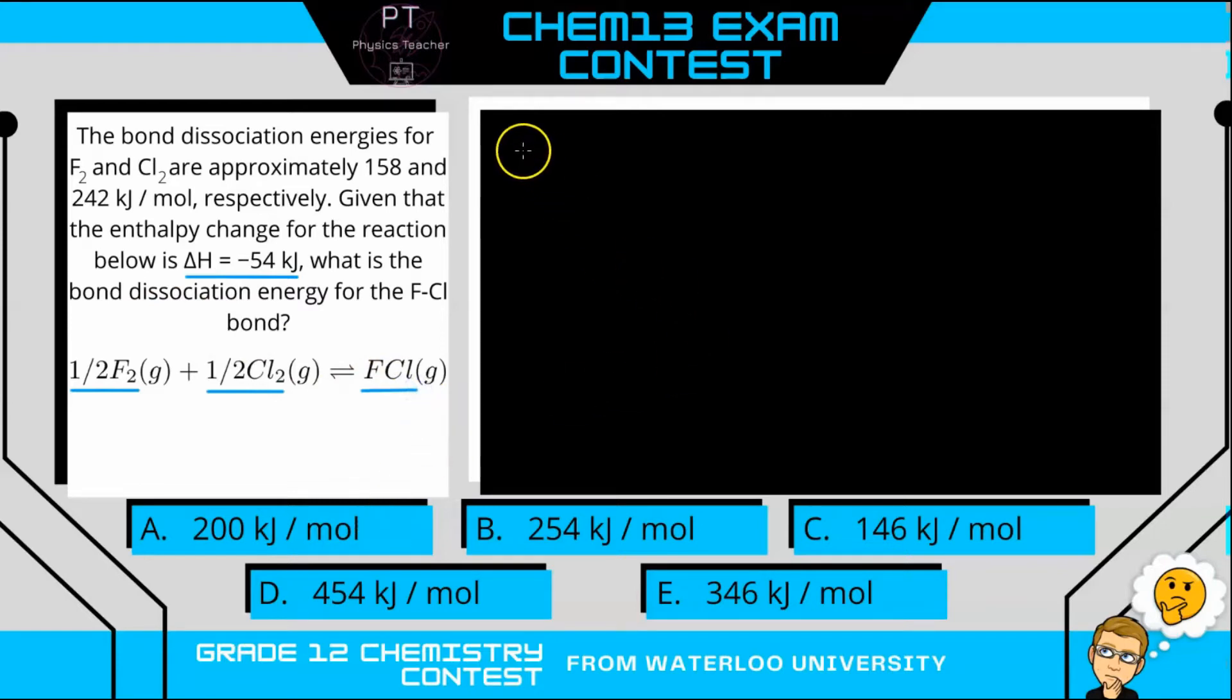So to do this, we're going to need our enthalpy equation, which is delta H equals the sum of all the moles of our reactants multiplied by their bond dissociation energies, so all the bonds that are going to be broken, and then we subtract the same thing but for all of our products, the bonds that are going to be formed.